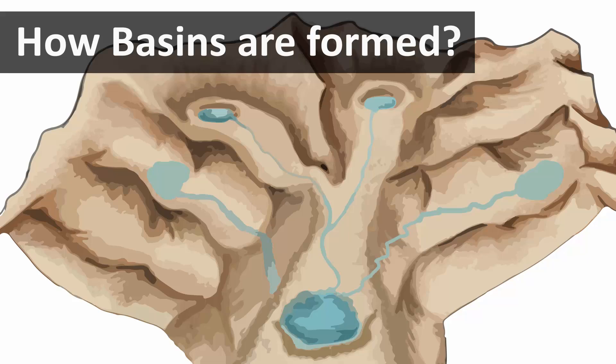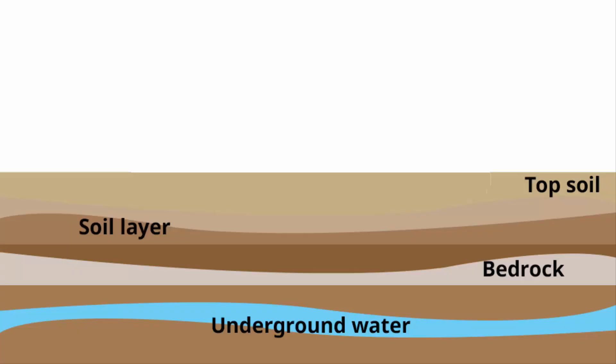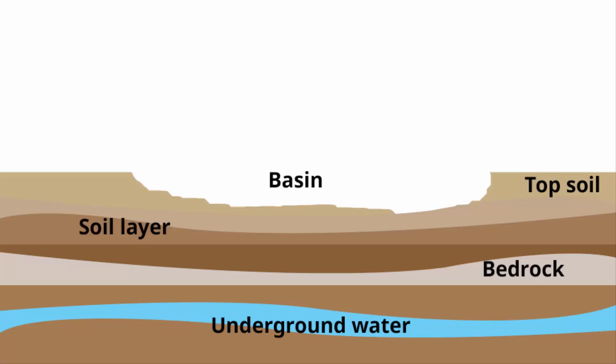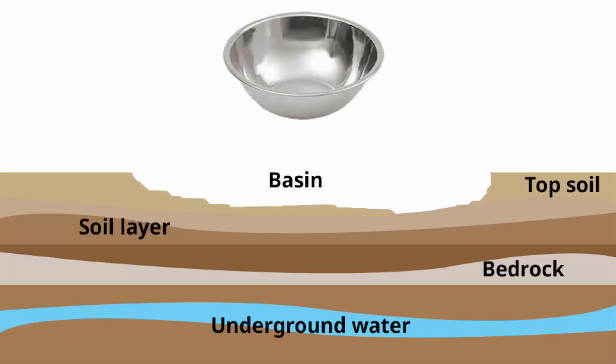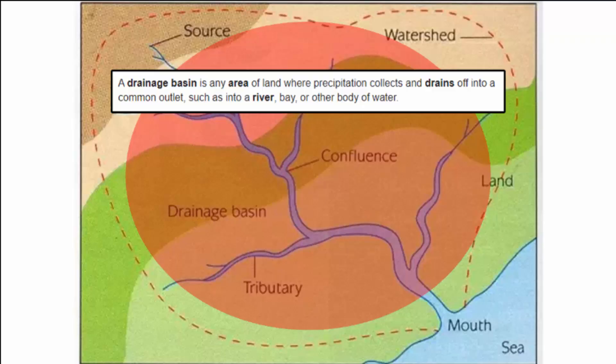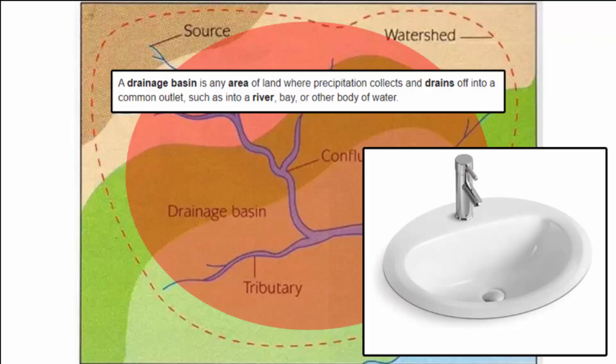In this video, we will learn how a basin is formed. When you look at a basin, basically it is a depression or a dip in the earth's surface. When you look at the shape, it looks like a ball and its sides are higher than the bottom. They are also in oval and circular shape, similar to a sink or a tub you have in your bathroom.